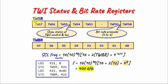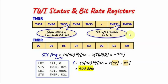The status register has two functionalities. The upper bits determine the status of the TWI control and bus, while the lower two bits provide the bitrate prescaler, which is a value between 0 and 3.